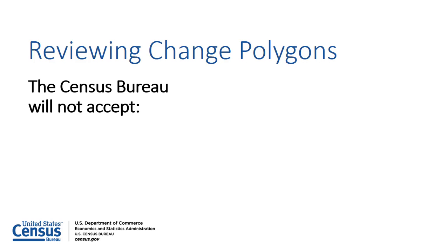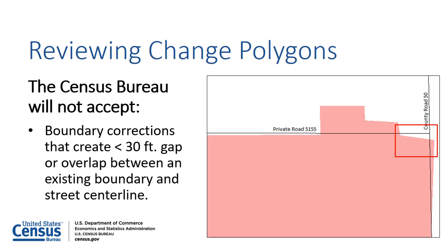The Census Bureau will not accept boundary corrections that create less than a 30-foot gap or overlap between an existing boundary and street centerlines. In this example, the small spatial boundary corrections would dissolve the boundary-to-feature relationship with multiple streets. Participants should note that in the event a boundary change results in a less than 30-foot gap or overlap, the Census Bureau snaps the boundary to the street centerline.